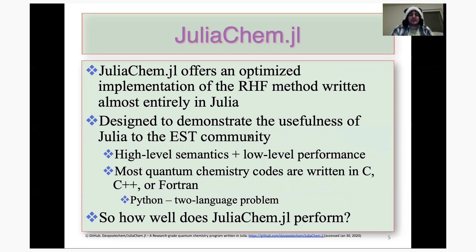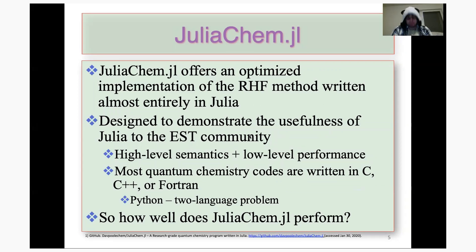JuliaChem is a package that offers an optimized implementation of the restricted Hartree-Fock method written almost entirely in Julia. Work on JuliaChem started about a year and a half ago, and its overall goal is to demonstrate the usefulness of Julia to the electronic structure theory community. The idea is that Julia has high-level semantics and low-level performance — basically getting the performance of low-level languages while remaining easily writable. Most quantum chemistry codes are written in C, C++, or Fortran, and some are combined with Python, which runs into the two-language problem, so Julia offers a solution to that.